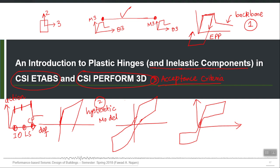Whenever you define a plastic hinge and associate an action-deformation curve with it, the program will also ask you to give IO, LS, and CP in both positive and negative directions as an input. After the analysis, the program can then tell you for each beam whether it crossed the IO level, LS level, CP level, or none.